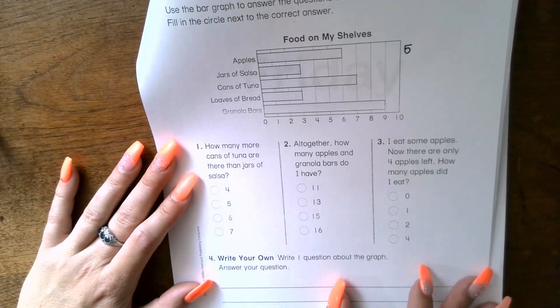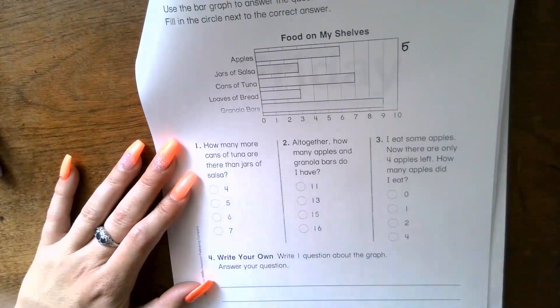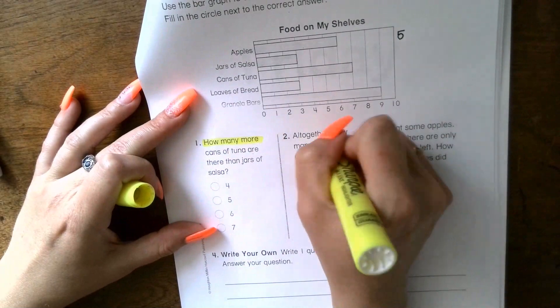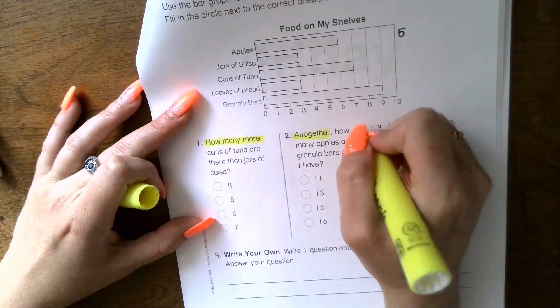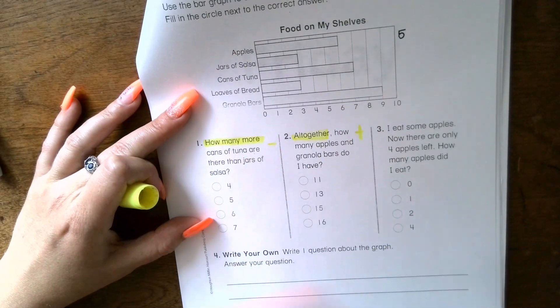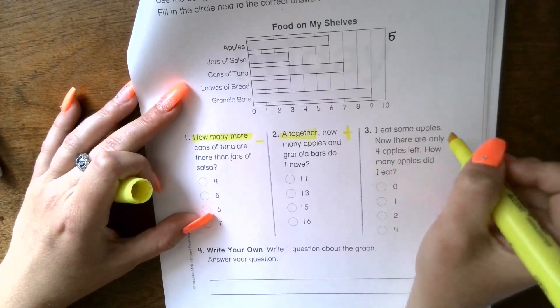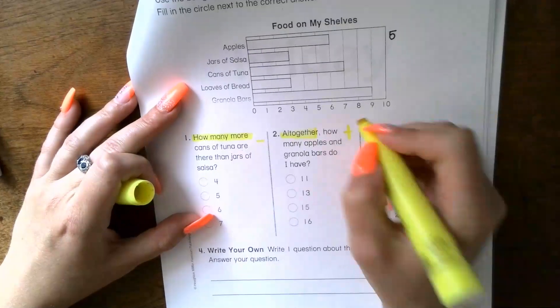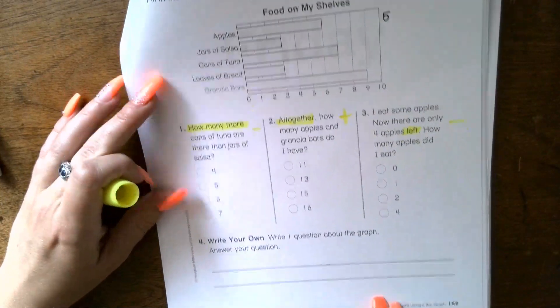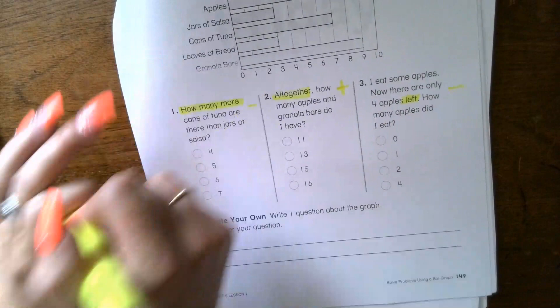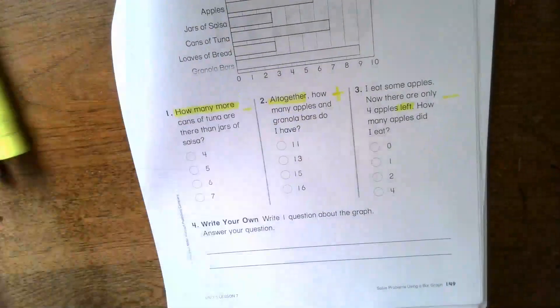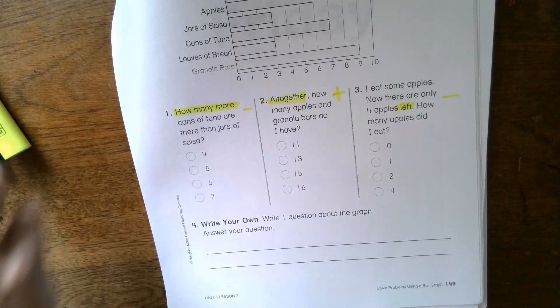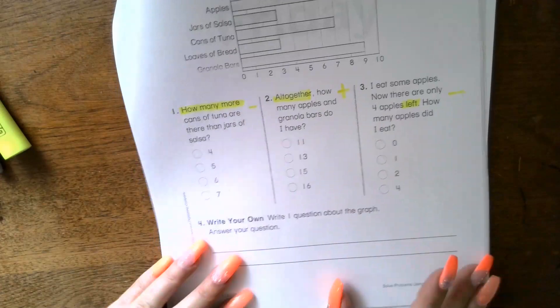Number one: how many more cans of tuna are there than jars of salsa? How many more - that's what's important there. Use your highlighters. How many more means that we're subtracting. Number two: all together, how many apples and granola bars do you have? So you're gonna add here, you're gonna subtract here. Number three: I eat some apples, now there are only four apples left. How many apples did I eat? Usually when you have the word 'left' it means that we're gonna subtract. Number four: write a question about the graph and answer your own question. Even if you wanted to add some information, you could say 'if I had five pears, how many fruits do I now have on the shelf?' But don't use that example, come up with your own one.